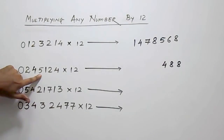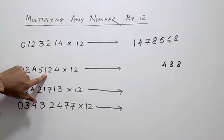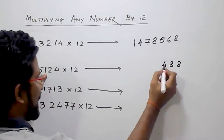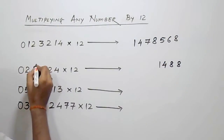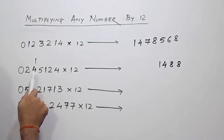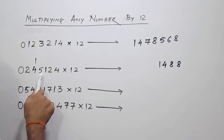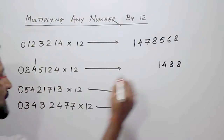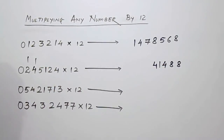Then next is 5 — 5's double is 10, 10 plus 1, that is 11. When you get a 2-digit number, write the unit digit and carry forward 1 to the next digit. Now 4 — 4's double is 8, 8 plus 5, that is 13 plus 1, that is 14. Again carry forward 1.